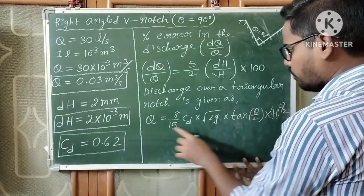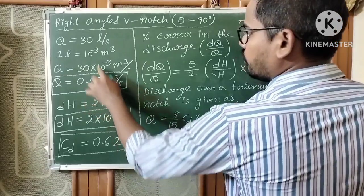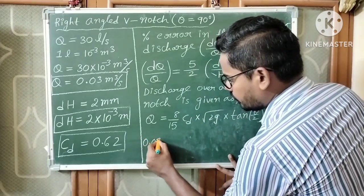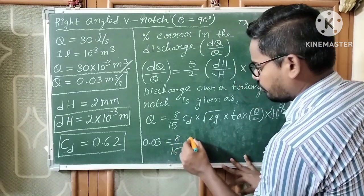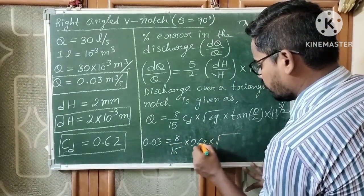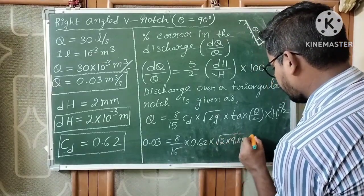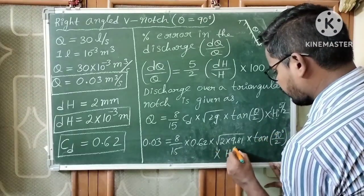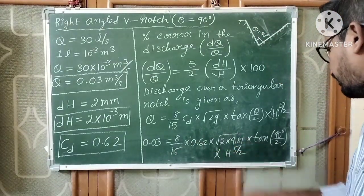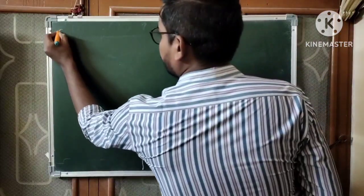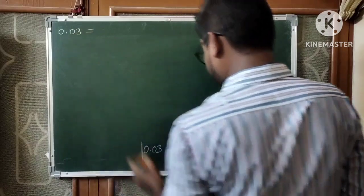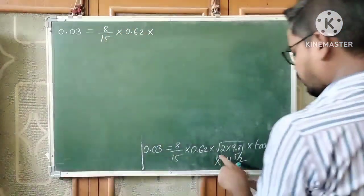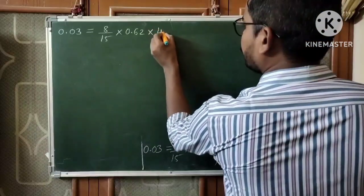Substituting all values: 0.03 equals 8 by 15 into 0.62 into root over (2 into 9.81) — which is approximately 4.43 — into tan(90 by 2), which is tan 45 equals 1, into H to the power 5 by 2. Transposing all known values to the left-hand side, we isolate H to the power 5 by 2.